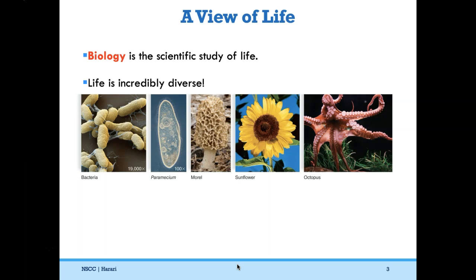Moving up in complexity we have this paramecium, which is a type of protist. Here is a morel mushroom, which is a type of fungus. Here we have a sunflower — that's a type of plant. And of course this octopus is an example of an animal. Us humans are animals as well.